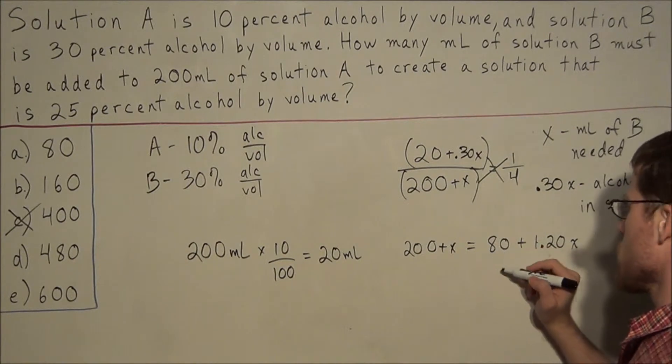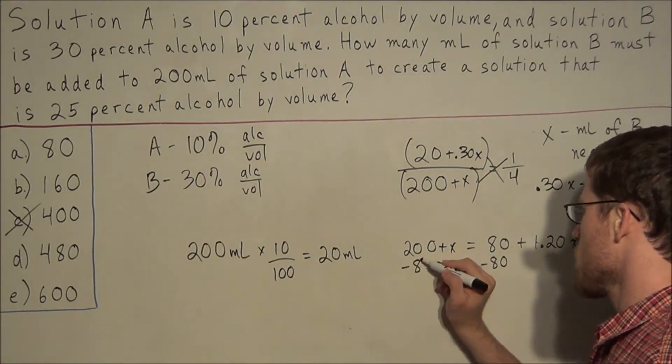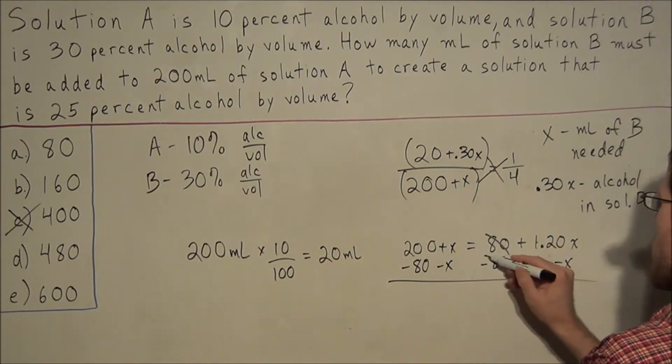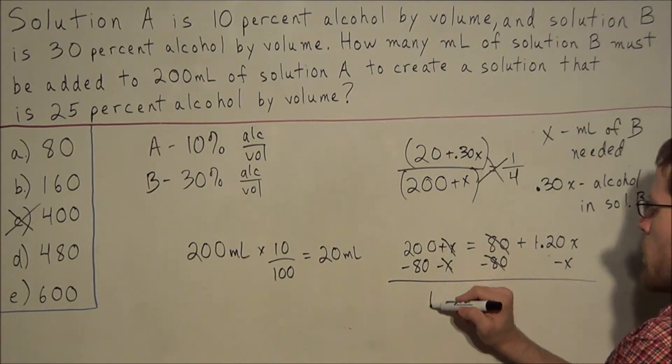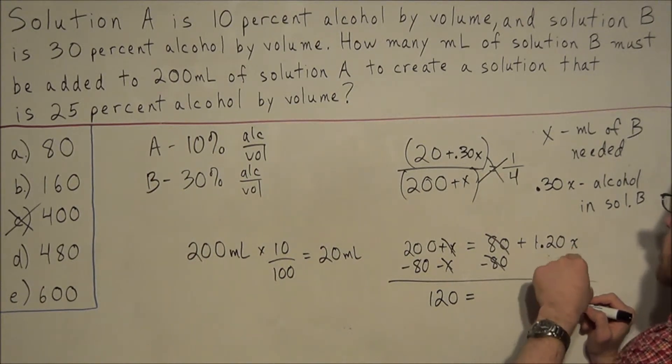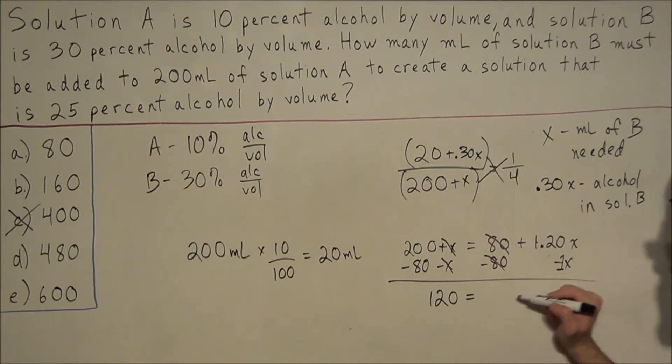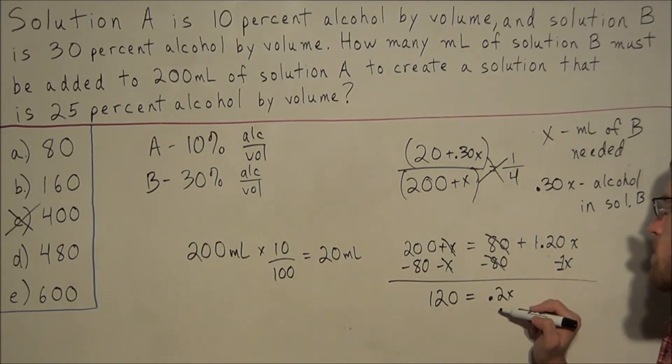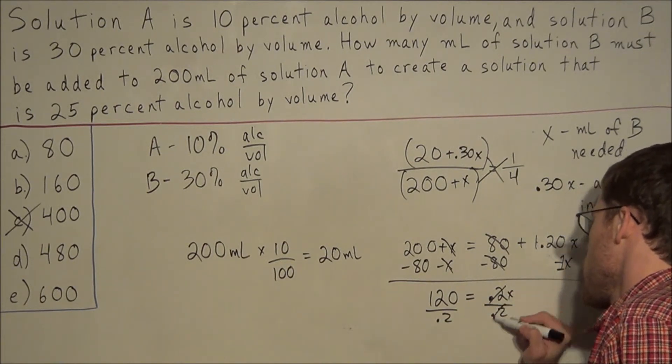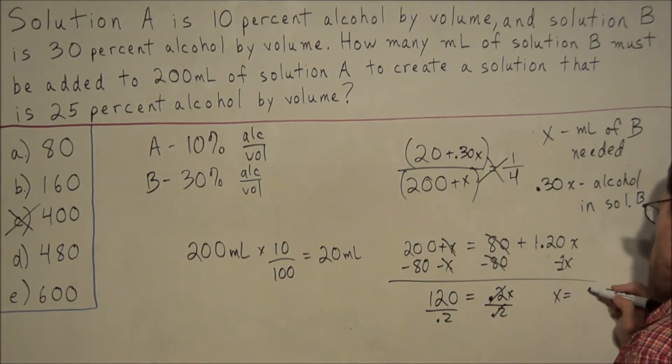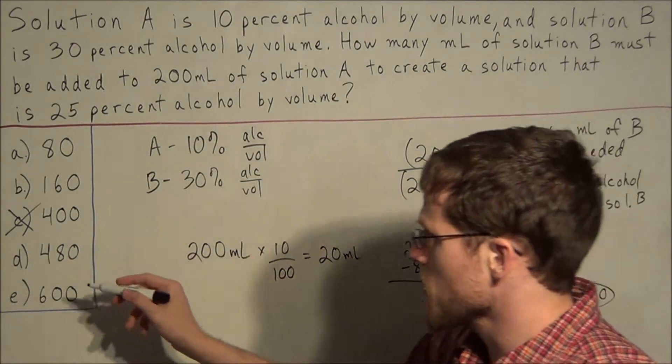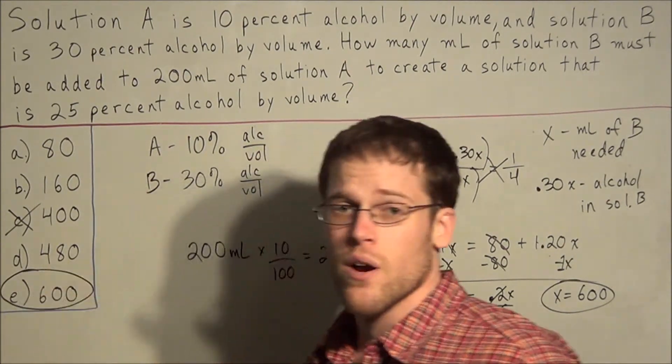So now I'm just going to do this quickly. We're going to subtract 80 from both sides. And at the same time, we're going to subtract X from both sides. Now you'll notice 80 minus 80 cancels. X minus X will cancel. And we have 120 is equal to 1.20x minus X. If we think of this as a 1 in front, it will give us 0.2x. And now to solve for X, we're going to divide both sides by 0.2. And this will tell us that X equals, if you punch this in a calculator, you'll get X equals 600. Which tells us once again that we have answer choice E as our final result.